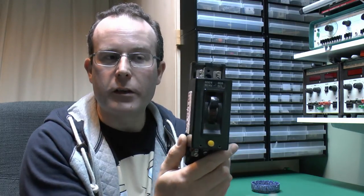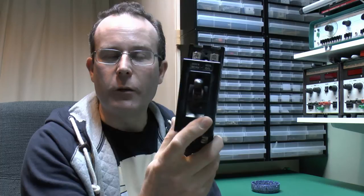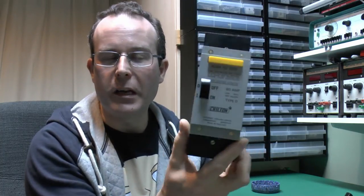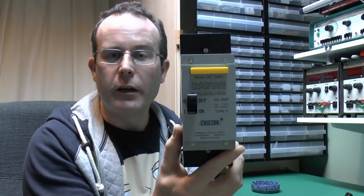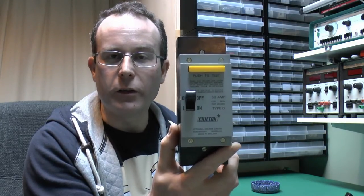This is the Crabtree one. It's obviously missing its covers but that's the Crabtree one. They also had red buttons as well as this yellow one. And the Chilton one was the other major common type. They all looked pretty much the same with that huge yellow test bar along the top.